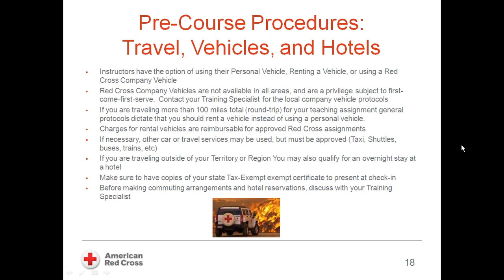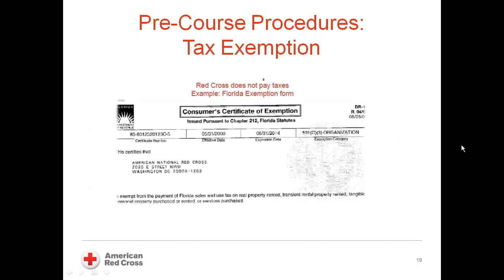Discuss any alternative commuting reservation with your training specialist to get approval. If your travel is far enough from your home to require a hotel stay, we can certainly arrange that with approval. Make sure you have your tax exempt certificate ready to show at the hotel to avoid additional charges. Here is an example of the Red Cross state tax exemption certificate for being a non-profit organization — this example is for the state of Florida. You can get a copy from your training specialist or from the SharePoint document sharing site of your area.